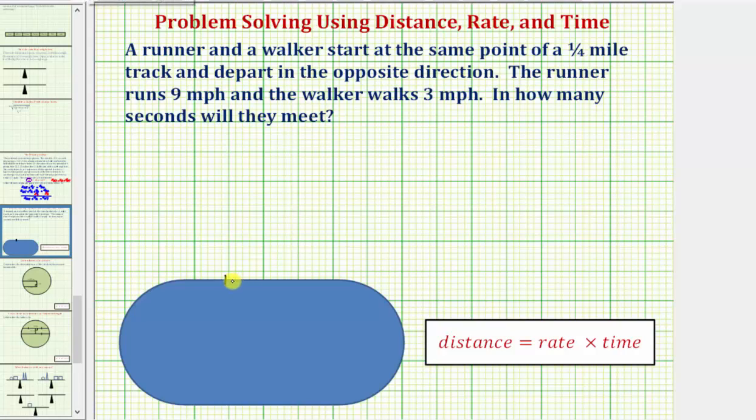Let's just say the runner runs in this direction at a rate of nine miles per hour. And therefore the walker would walk in the opposite direction, or this direction, at a rate of three miles per hour.